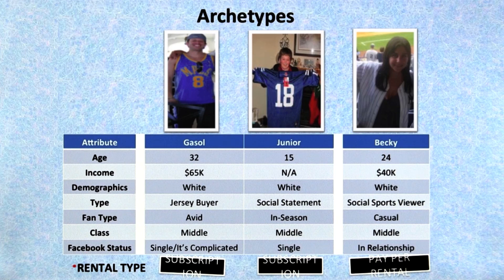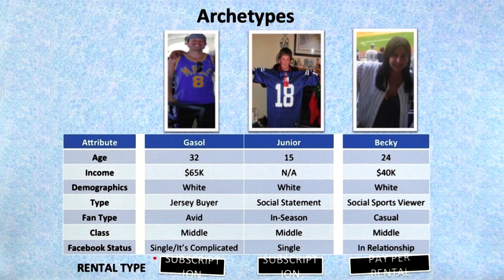What kind of class were they? Were they upper class — could they afford anything? Or were they middle class, or could they barely — they don't even have a credit card? What was their Facebook status? And more importantly, what kind of rental type would they like? It turned out that understanding this was really helpful for our pricing model and our revenue streams.